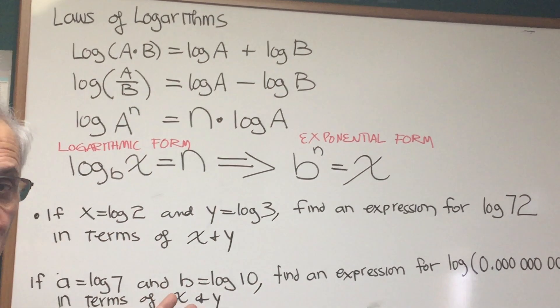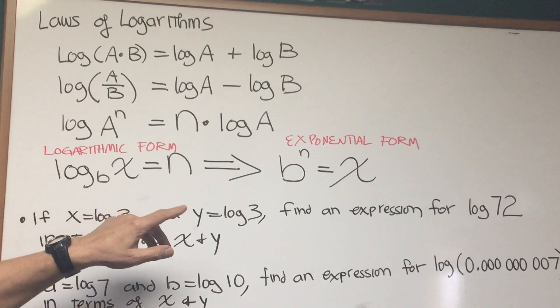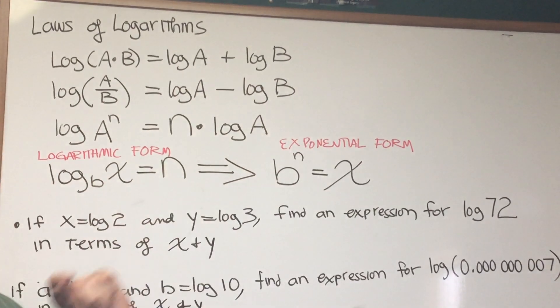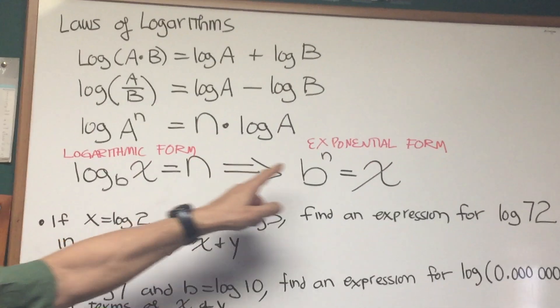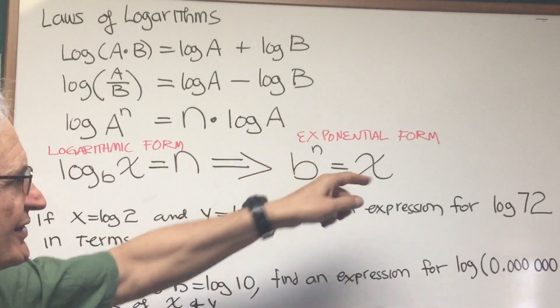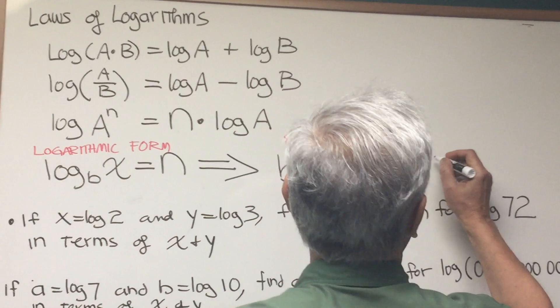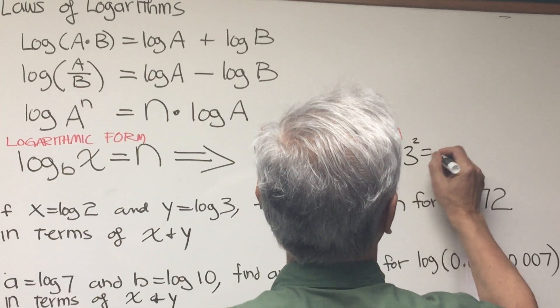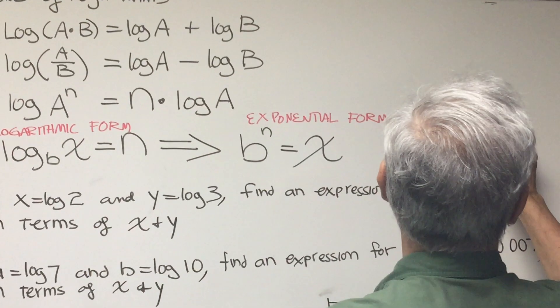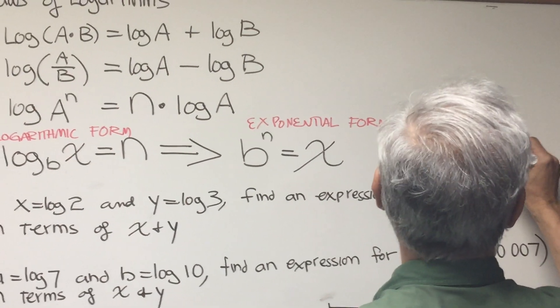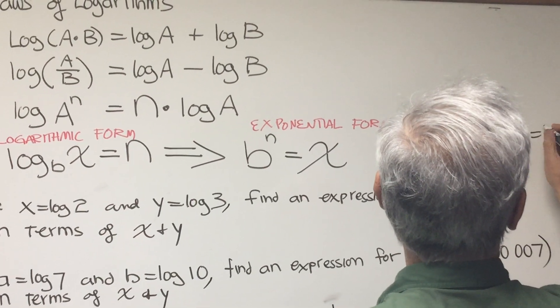There's also another important relation you should know, the conversion from logarithmic form to exponential form and vice versa. Log base b of x equals n converts to b^n equals x. So in other words, if you have 3 squared equals 9, that's my exponential form, that will convert to log base 3 of 9 equals 2.